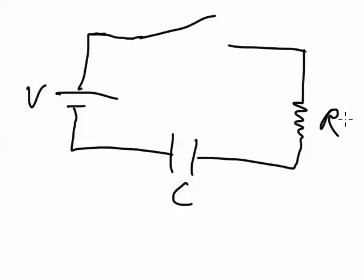This is called an RC circuit because it has a resistor and a capacitor. A resistor starts with R and a capacitor starts with C, so that is an RC circuit.